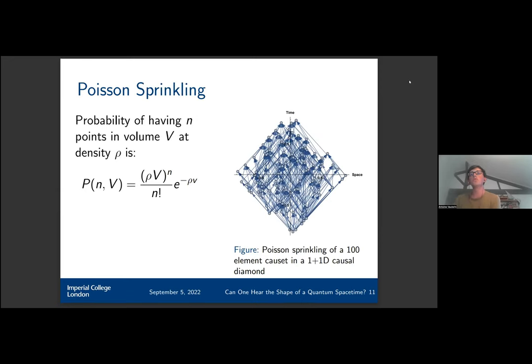If we want to study the spectra of different spacetimes using causal set theory, we need a way to generate causal sets which correspond to specific manifolds. For this we use Poisson sprinkling, which is the process of sprinkling events onto a manifold, making sure that the probability of having n points in a volume V at density ρ follows a Poisson distribution.